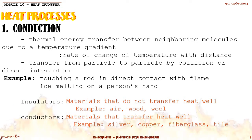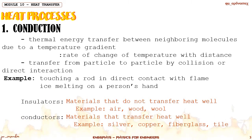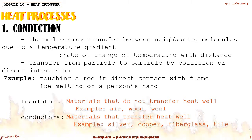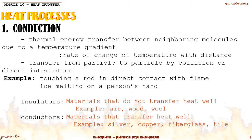Stainless steel transfers heat easily. Our cooking pots and teflon pans are conductors because they transfer heat very well to cook our food. To summarize: insulators do not transfer heat well — think of wool jackets — while conductors, like cooking pans, easily distribute heat.